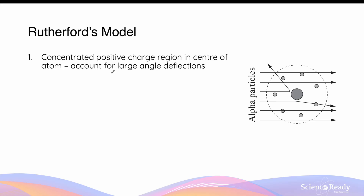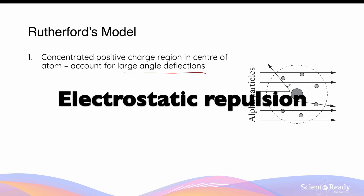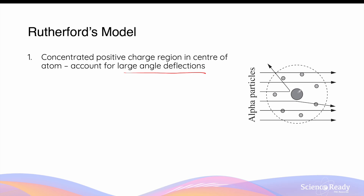The results of the gold foil experiment led Rutherford to propose a new model of the atom. In this model, Rutherford proposed that in an atom there exists a concentrated positively charged region in the centre of the atom called the nucleus. He said this to account for the large angle deflections seen in the minority of alpha particles. When those select few alpha particles collided with the positively charged nucleus of the gold atom, the electrostatic repulsion between the alpha particles and the gold nucleus resulted in a deflection of a very substantial angle. The mass of the gold nucleus, which comprised of protons and neutrons as we now know today, was much more significant compared to that of electrons.